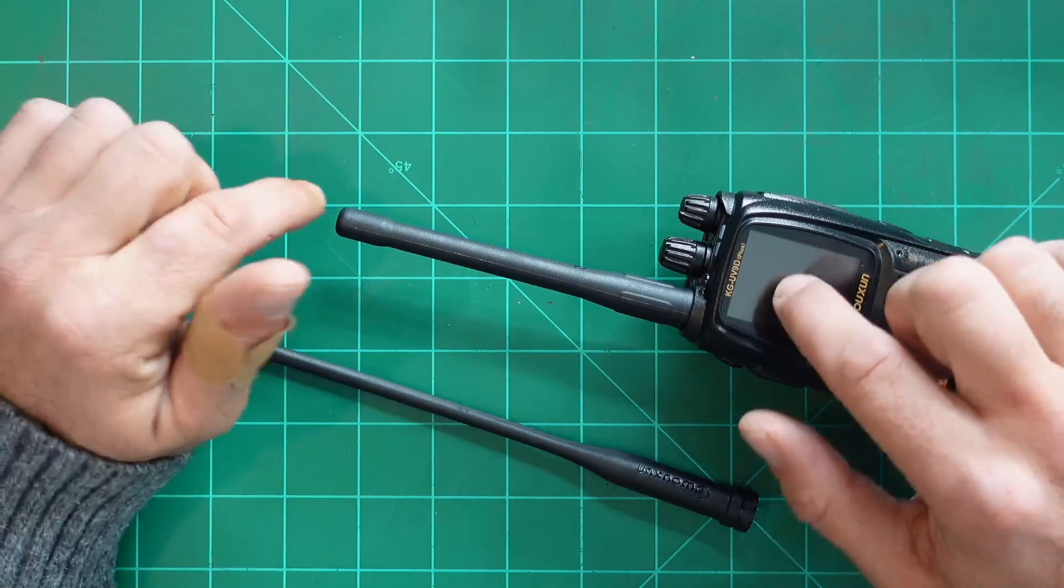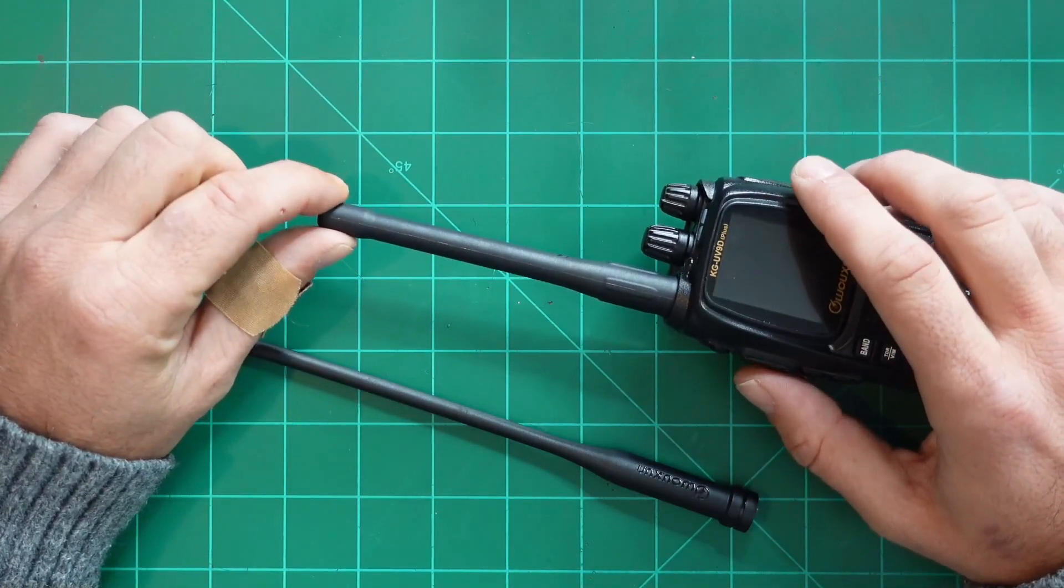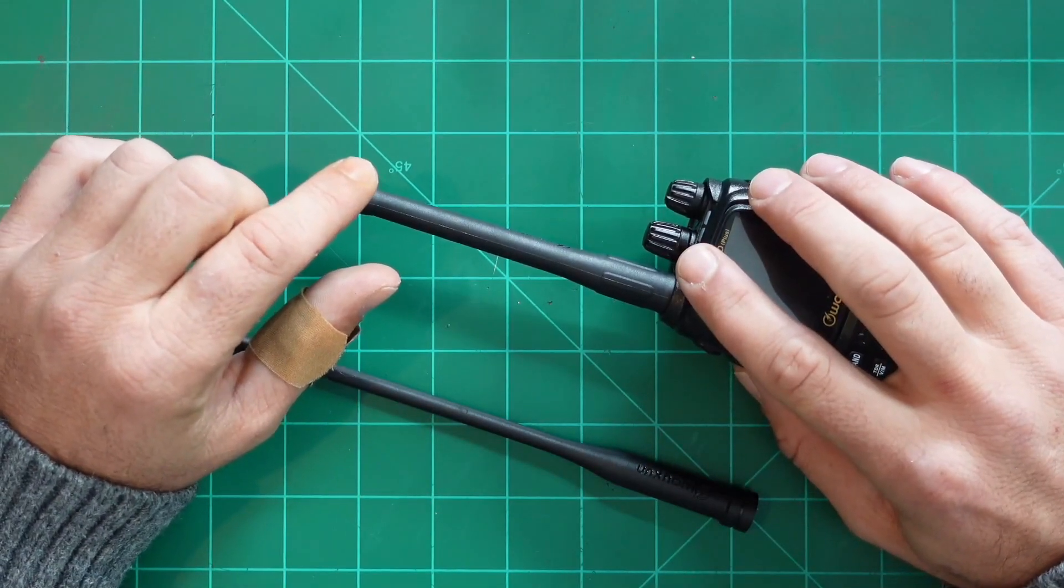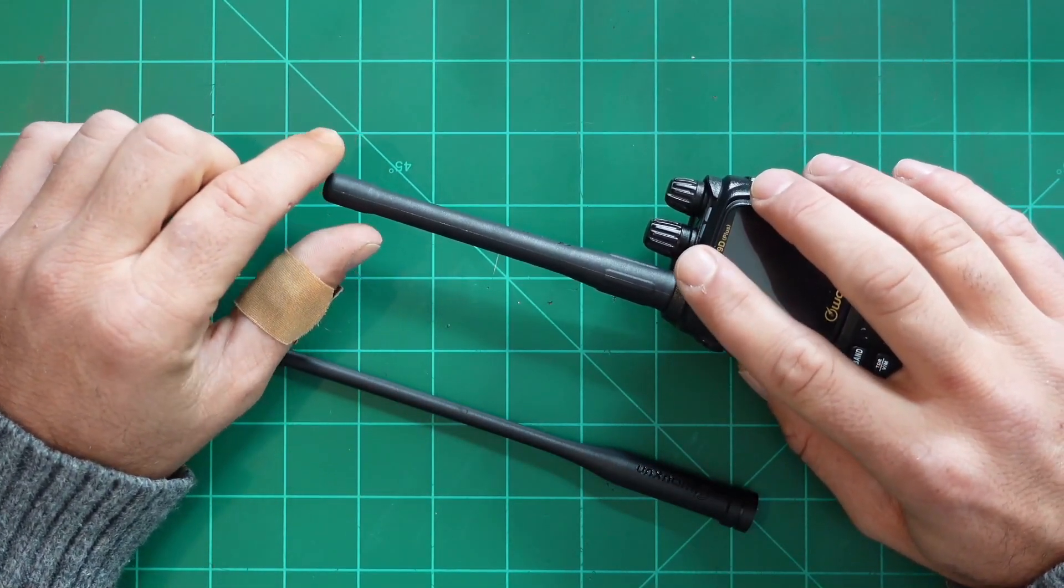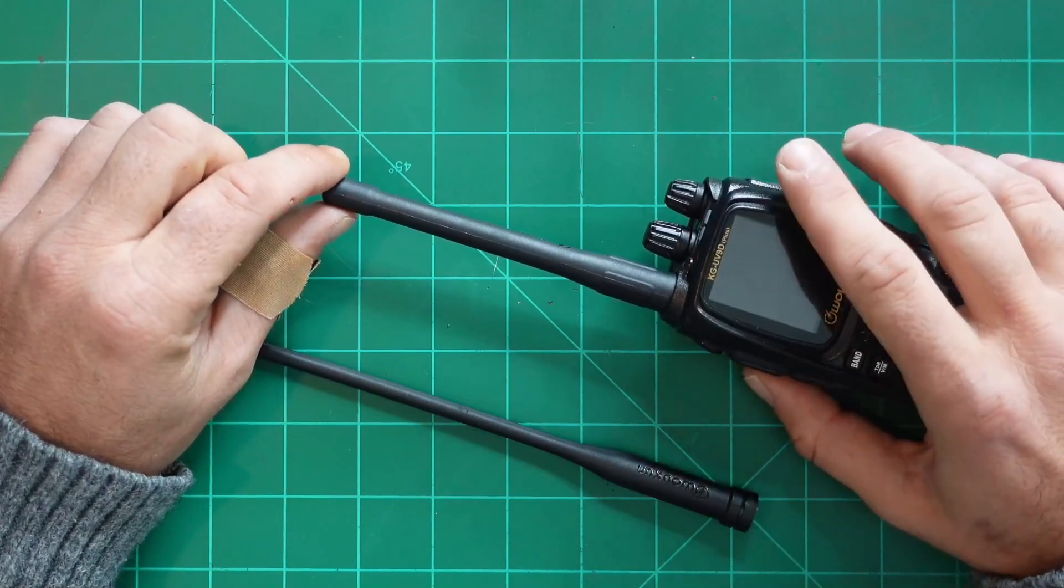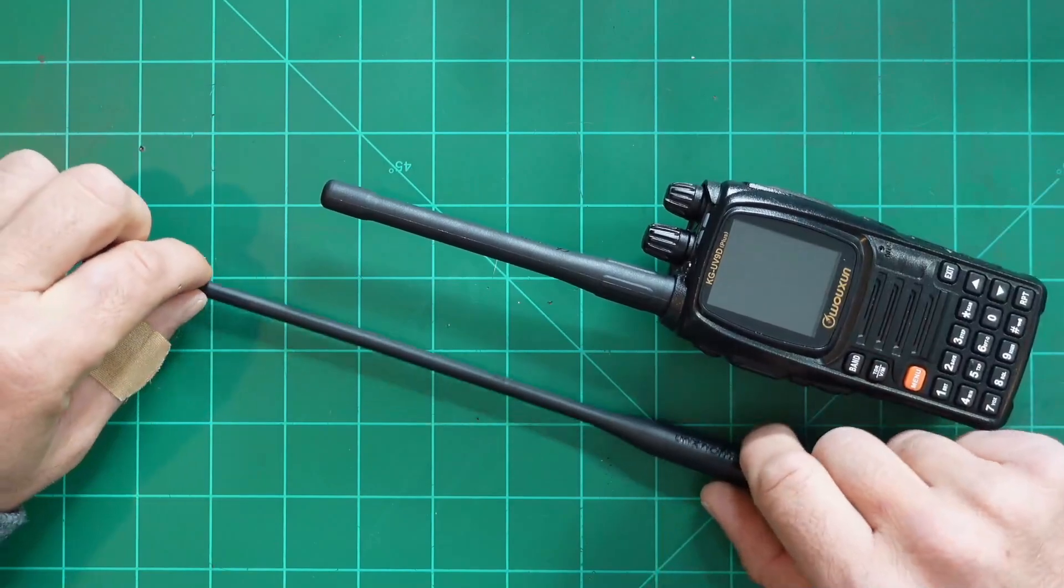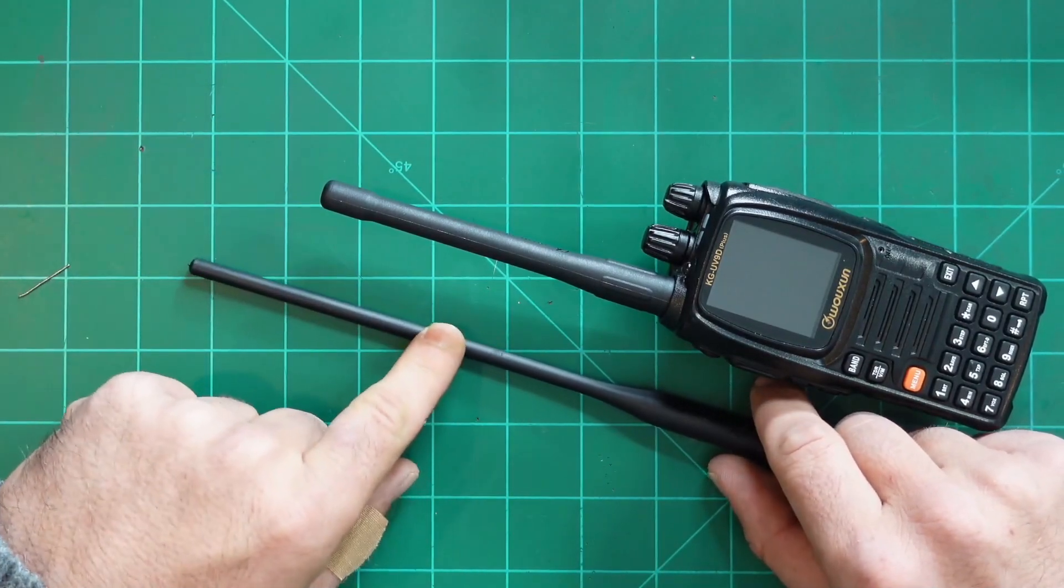The standing wave ratio at 144 megahertz was 1.72 to 1 with 39 ohms. It then went to 1.5 to 1 at 146.1 megahertz at 50 ohms and 1.93 to 1 at 148 megahertz at 47 ohms. This one was somewhere around 3 to 1.